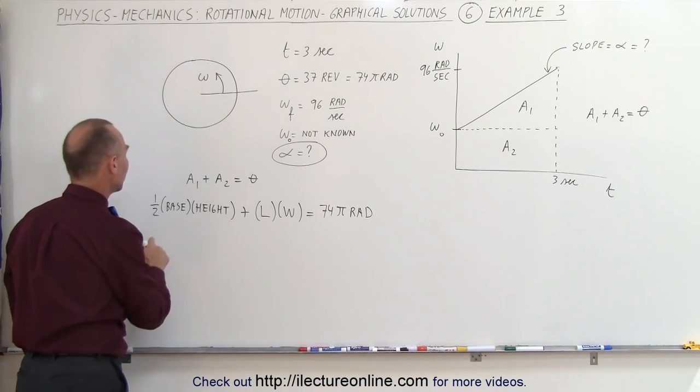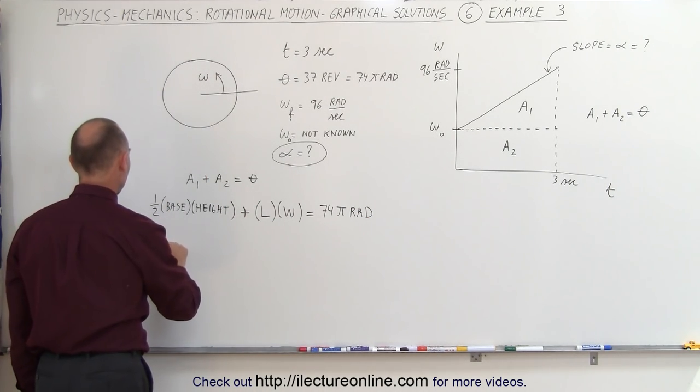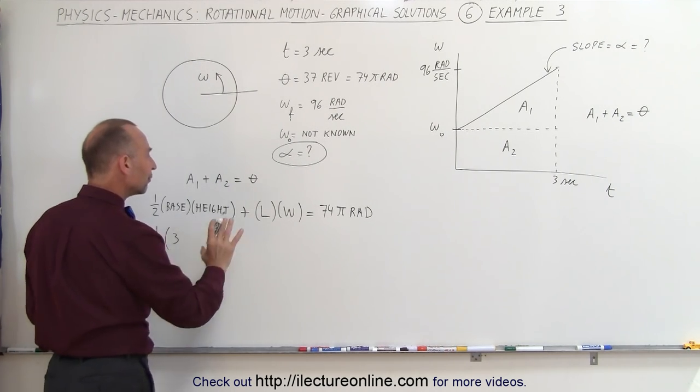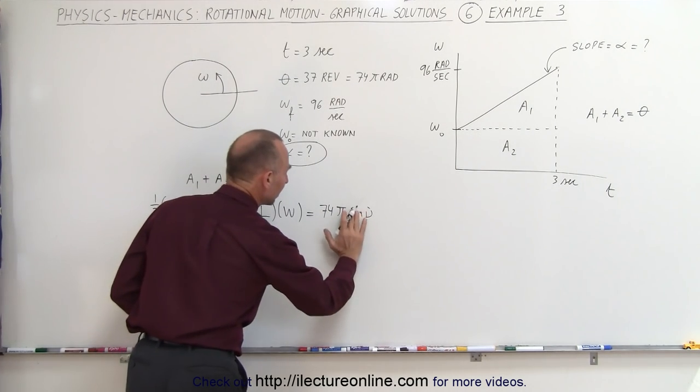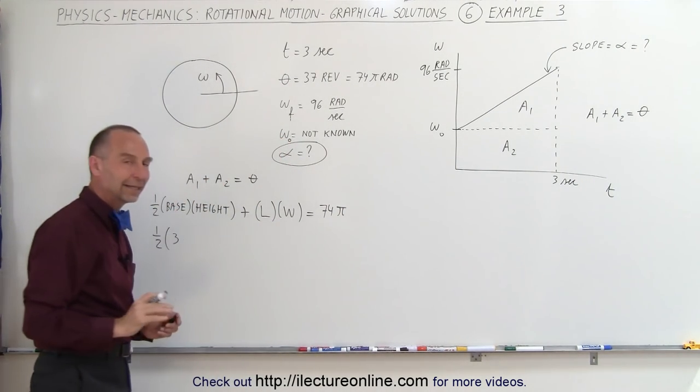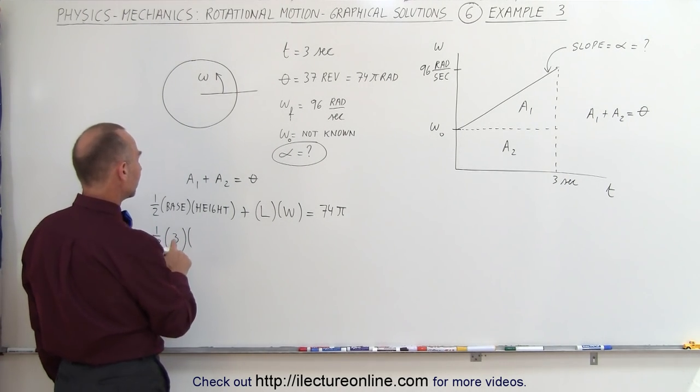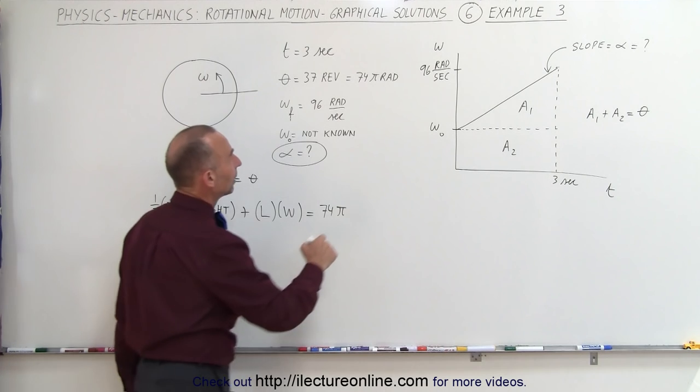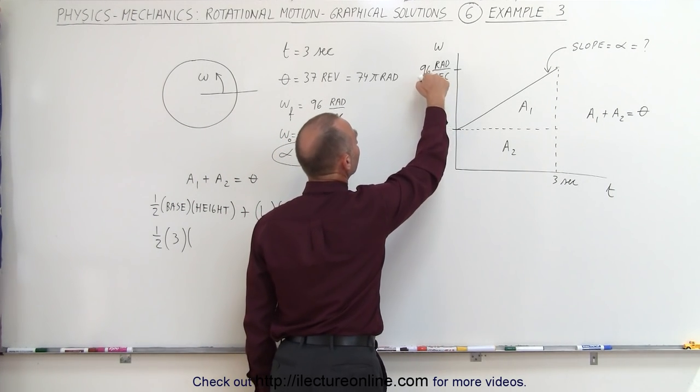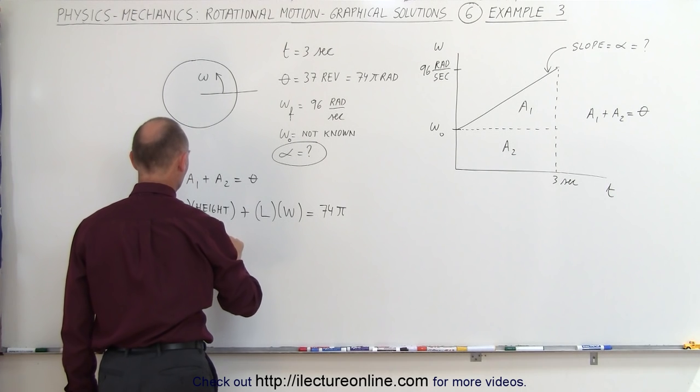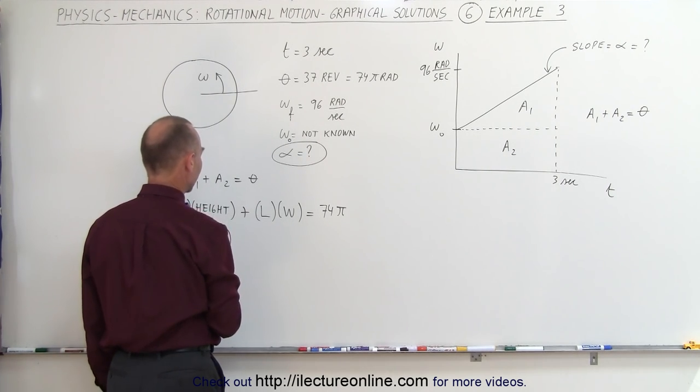Alright, now let's plug in and see what we know. One half times the base, we know the base is 3 seconds. And I'm going to leave off the units for now so that it's not so messy and we can more easily deal with everything. And the height, well the height of the triangle is from here to there. So it's simply 96 minus omega sub naught. We don't know what omega sub naught is.